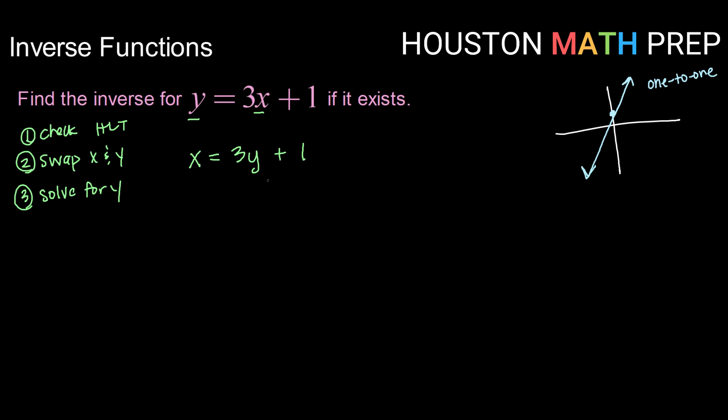So take this equation and re-put it into y equals. So I can do that by first subtracting one from both sides. So now x minus 1 equals 3y.